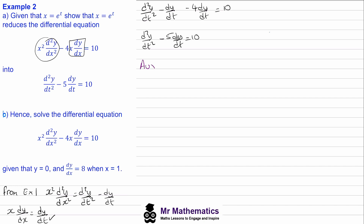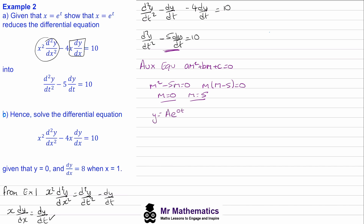Using the auxiliary equation: m² minus 5m equals zero. Factorizing the left-hand side: m(m minus 5) equals zero. So our solutions are m equals 0 and m equals 5. Using these with our complementary function: y equals A·e^(0·t) plus B·e^(5t). Since e^0 equals 1, this simplifies to y equals A plus B·e^(5t).